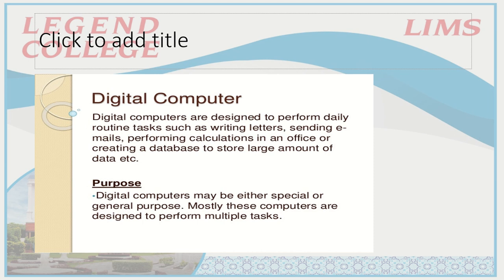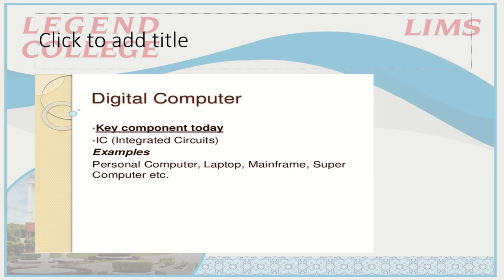Digital computers are general purpose — we can perform daily tasks with them. The key component used in our digital computers is the integrated circuit (IC), which contains millions and billions of transistors. For example: personal computers, laptops, mainframes, and supercomputers. We will see these types further under configuration.